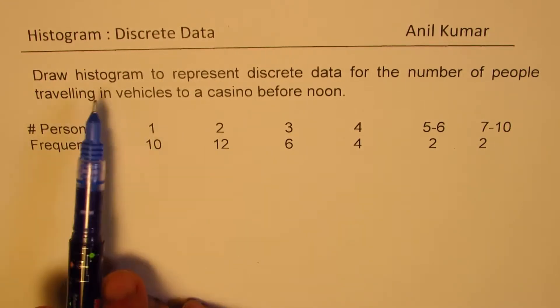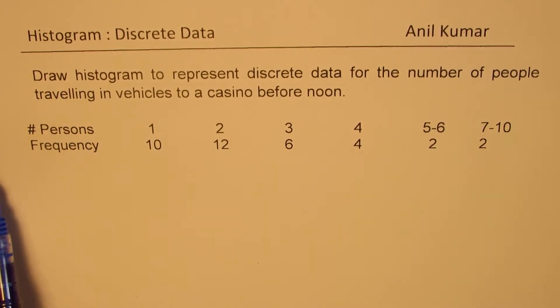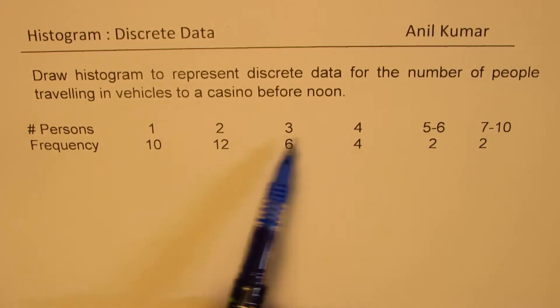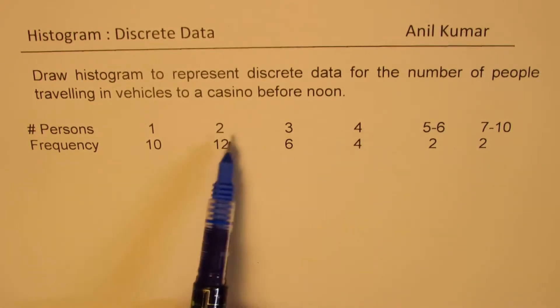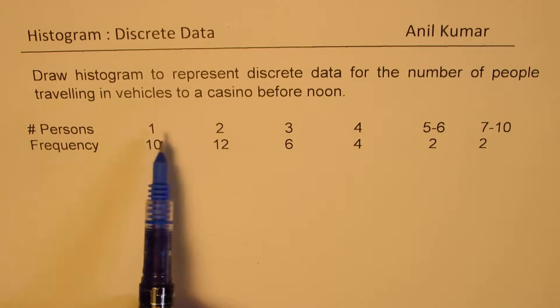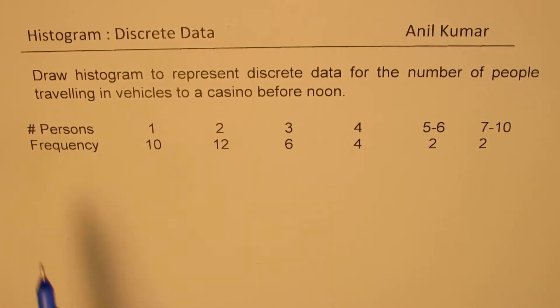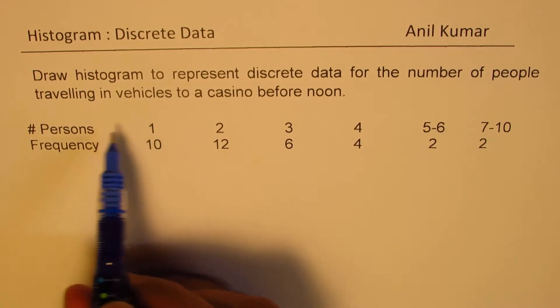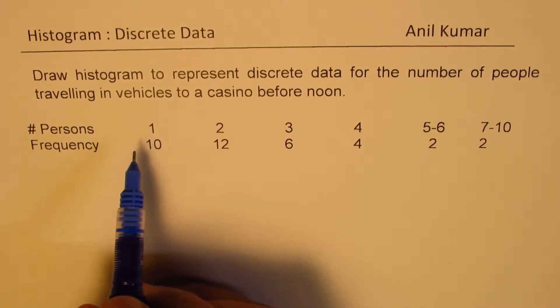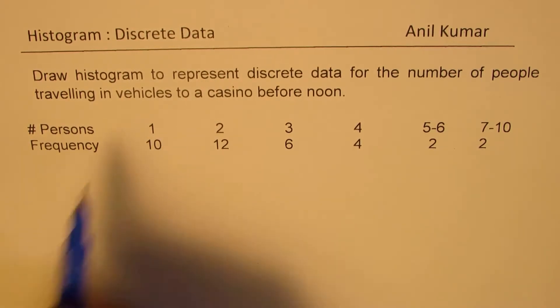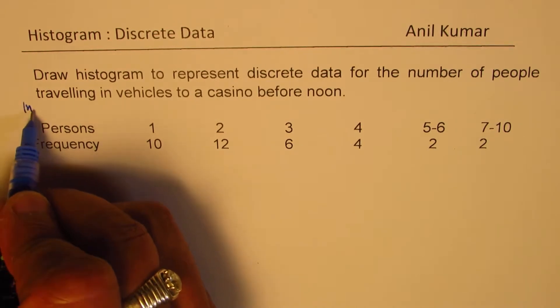Now here we have a couple of things. One, we have unequal numbers in the form of persons and it's a discrete data. How do we first convert this discrete into a continuous data? Well, to make it a continuous data, we introduce intervals. And here we can introduce a column for intervals.